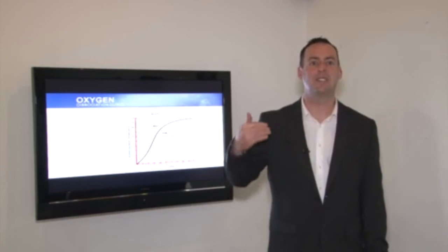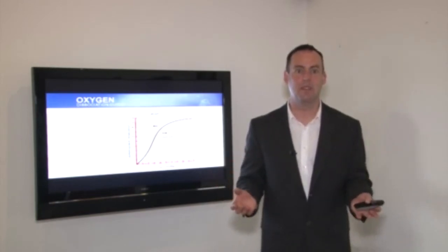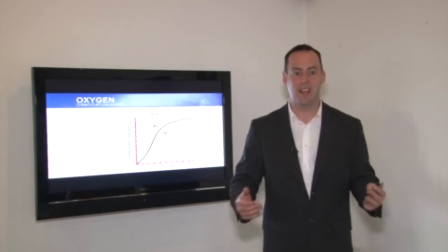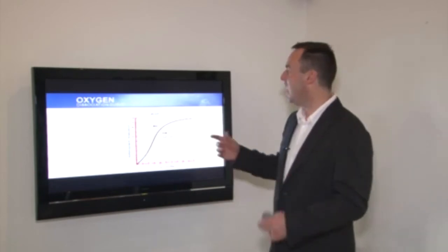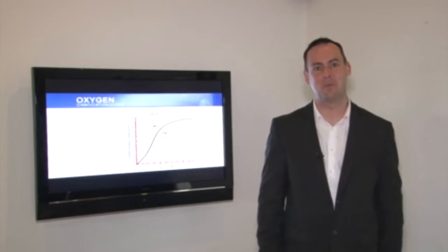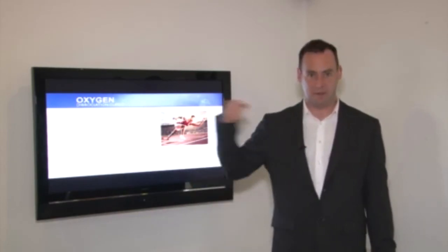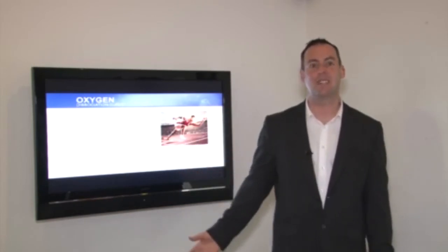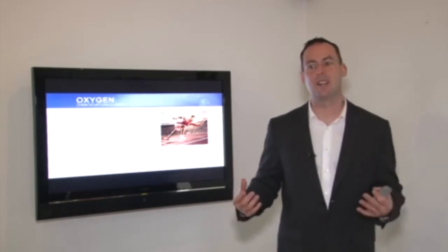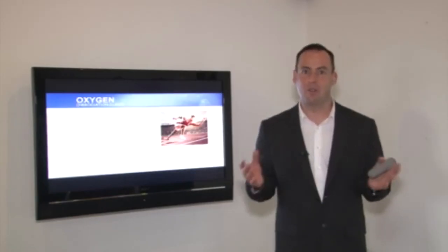Ironically, to deliver more oxygen to the cells, our breathing should be light. If our breathing is heavy, we lose carbon dioxide and the curve shifts left, strengthening the bond between hemoglobin and oxygen — which is not what we want. During physical exercise, the muscles get hotter and produce carbon dioxide, and those are the catalysts for the release of oxygen from the red blood cells to the working muscles.